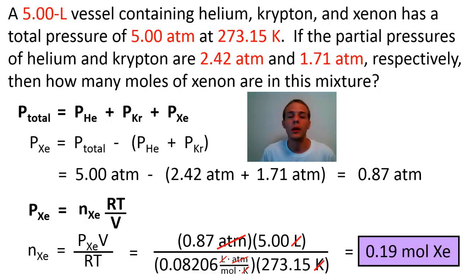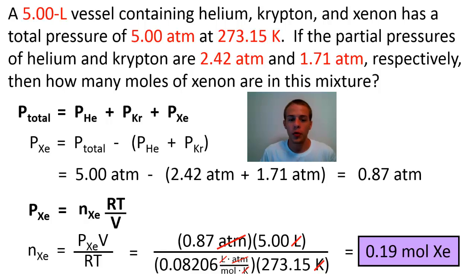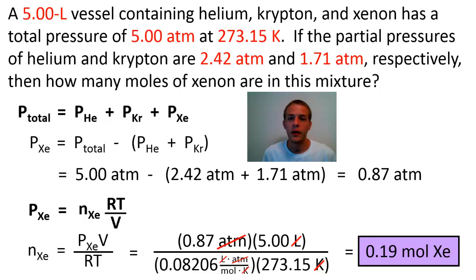We could also convert 0.19 moles of xenon to mass in grams using the molar mass from a periodic table. That's one example of using partial pressures. We didn't fully use the mole fraction relationship here, but as long as you understand the formulas and how to derive them, you should be able to solve any problem involving partial pressures — just pay close attention to what the problem gives you and what it asks for.